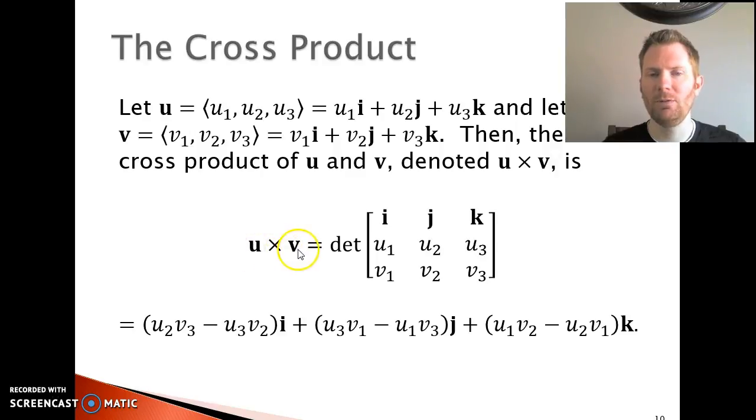The order does in fact matter. If you do u cross v, u needs to go in the middle and v needs to go in the bottom. You will get something different if you put v here and u here. You get v cross u in that case, and as we'll see later, u cross v does not equal v cross u.